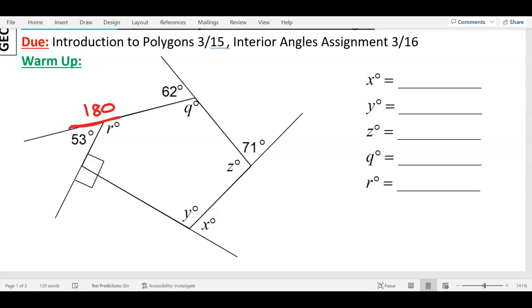So how do I figure out R? 180 minus 53 is what? 127. Okay, you can use your calculator, plug it in. So R is 127 degrees.